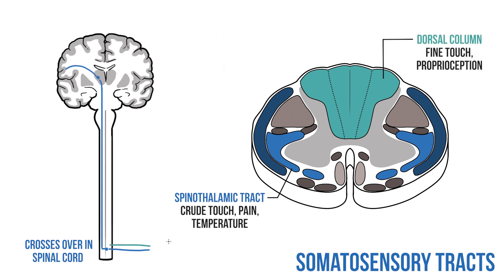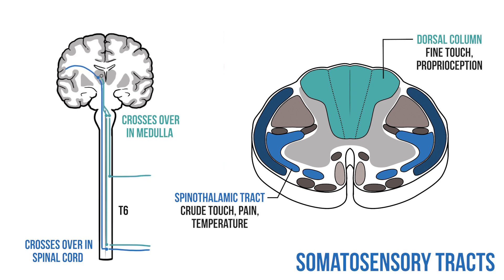The fibers in the dorsal column enter the cord as before, but travel up the ipsilateral side to the medulla. As an aside, these fibers will be organized based on where they come from, with fibers below T6 traveling up the medial portion of the column, and any above T6 running along the lateral aspect. As they enter the medulla, these neurons synapse in one of two medullary nuclei: medial fibers will synapse in the nucleus gracilis, with the lateral fibers synapsing in the nucleus cuneatus. Fibers then head from both nuclei to the sensory cortex.